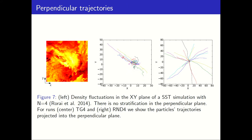Now that we saw that particles oscillate in layers that they do not leave, let's study the dynamics of the perpendicular trajectories. Here you can see the density fluctuations in a perpendicular plane in stably stratified turbulence. In the Taylor-Green simulation, most particles are trapped inside eddies and some are advected by the wind in the shear layer between the two eddies. In the random simulation, particles are advected in different directions, as different layers have different wind directions.